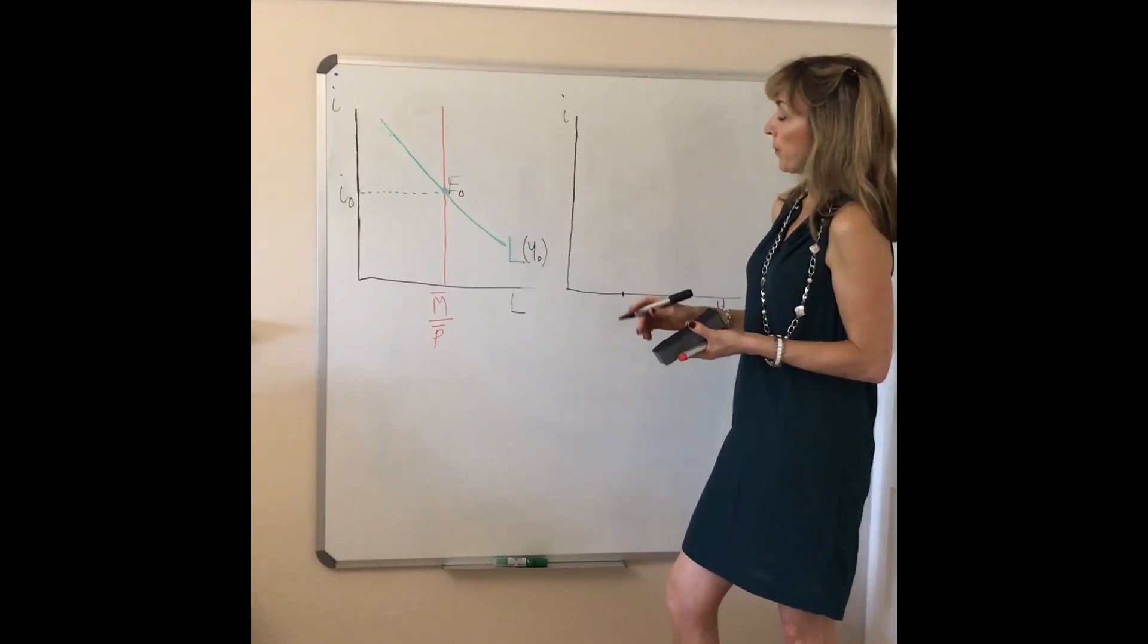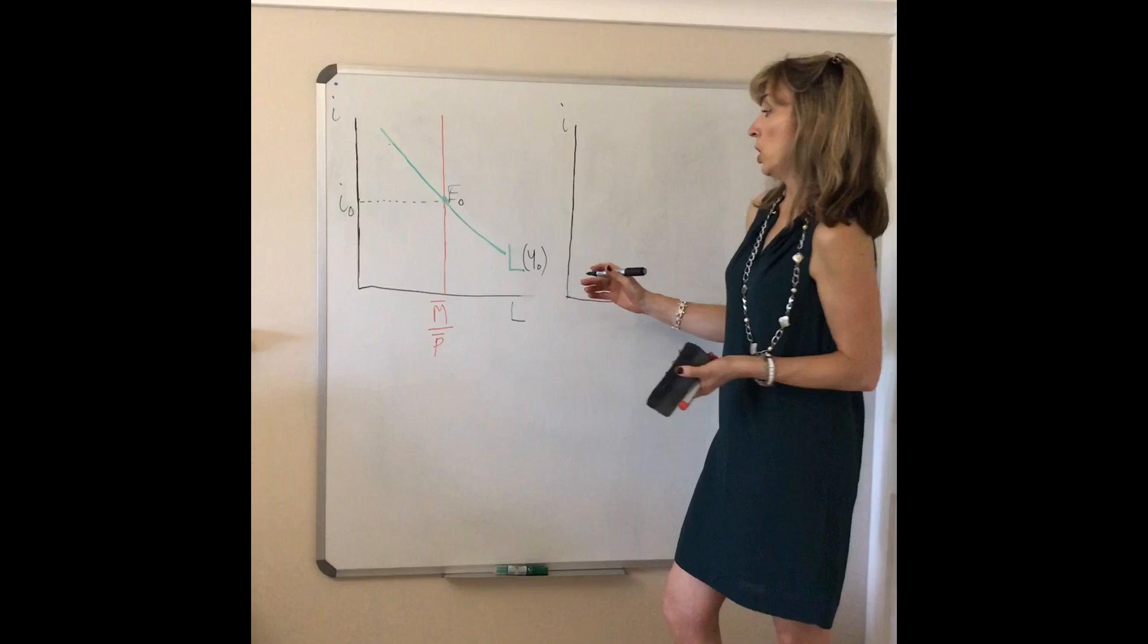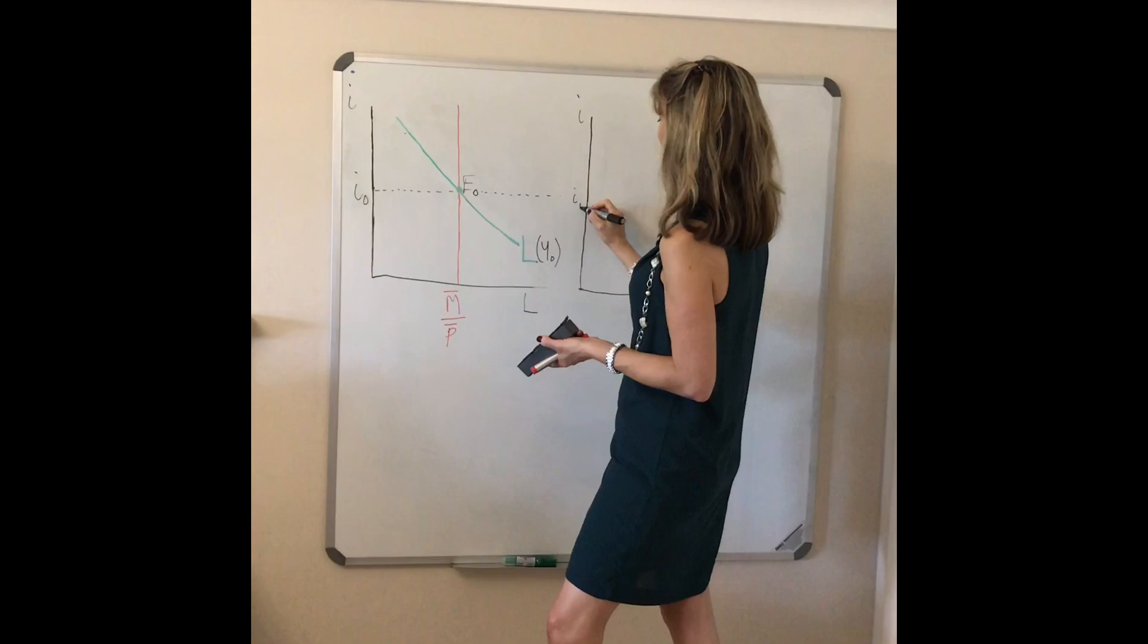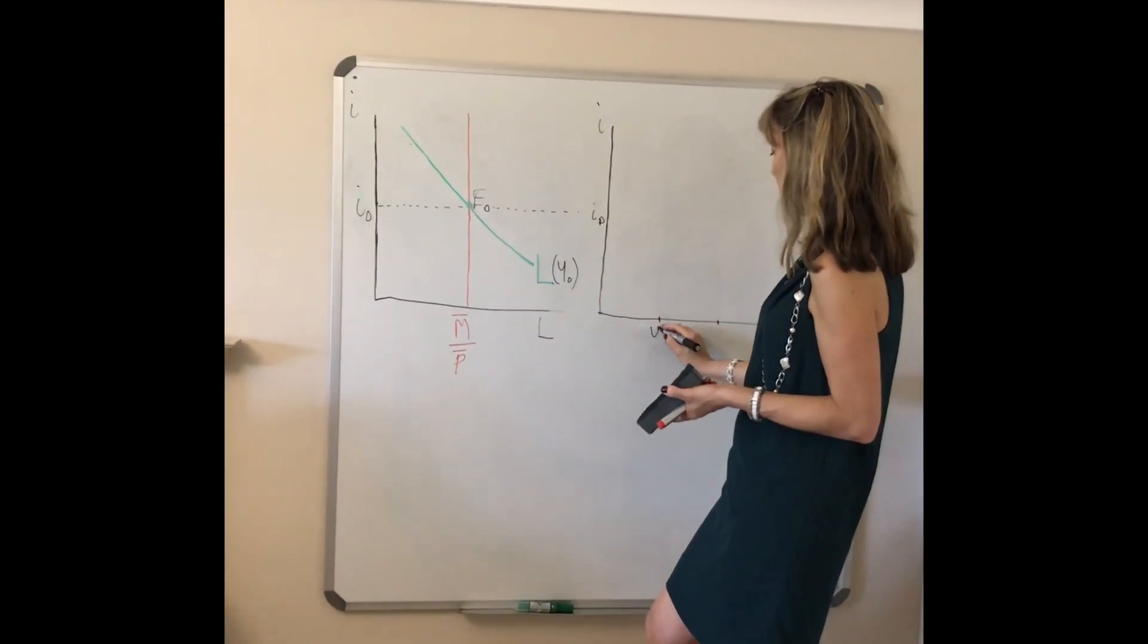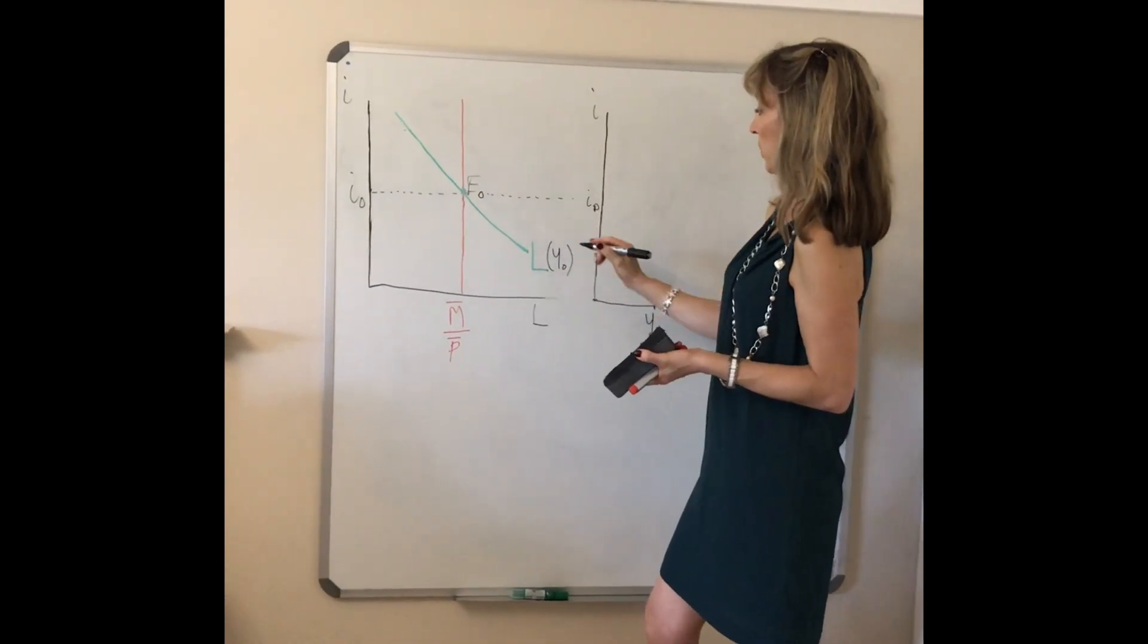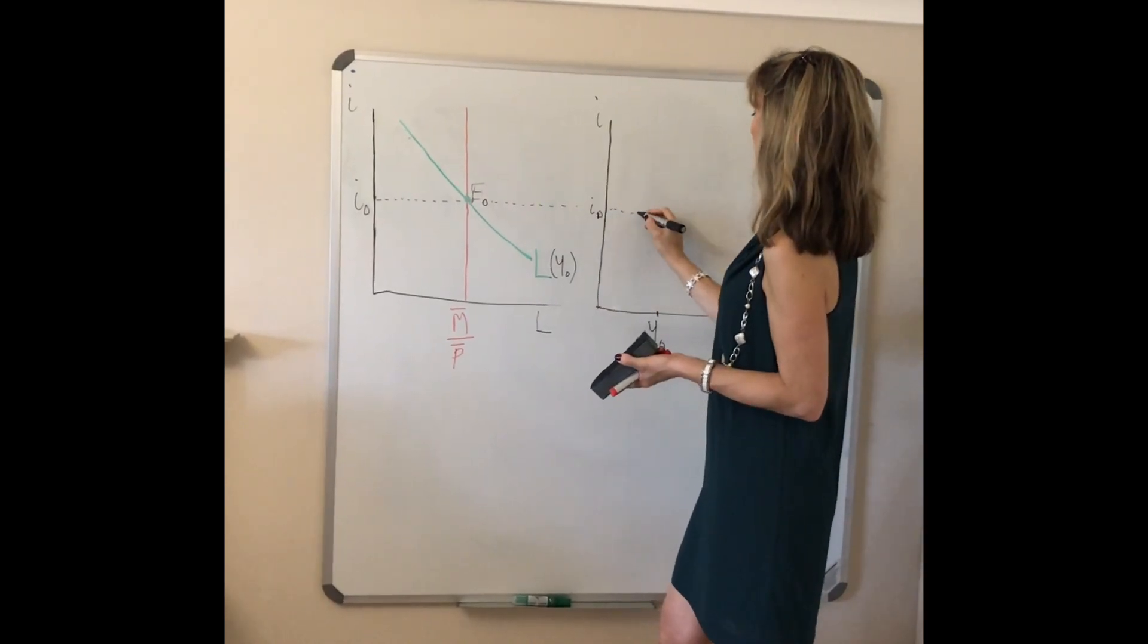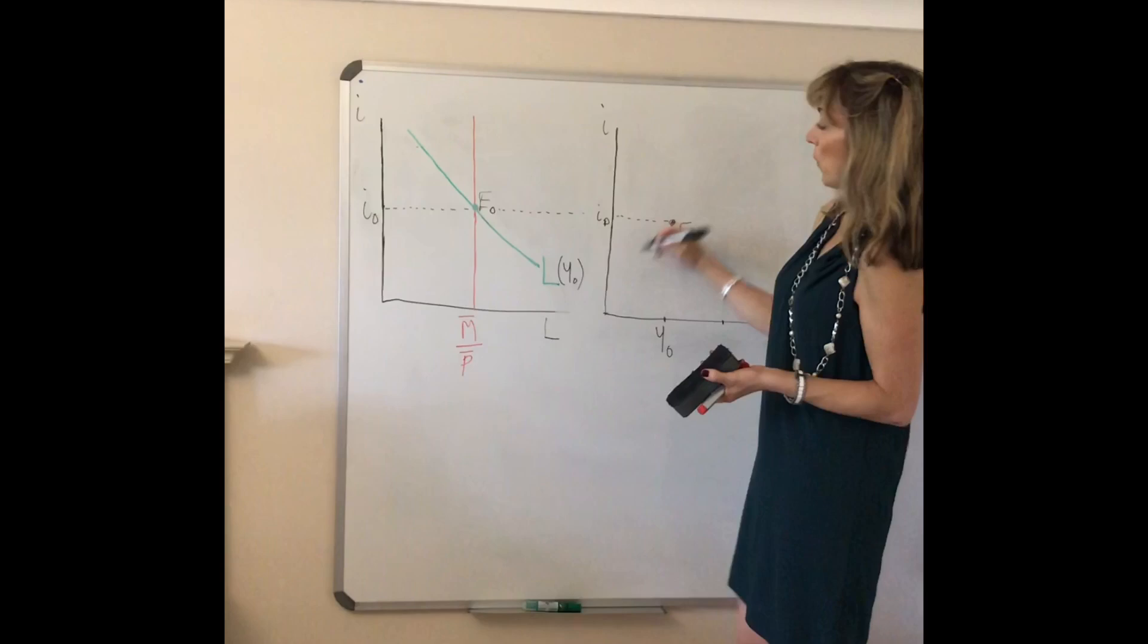We found this first point. We found that at interest rate I0 we start off with income being Y0. So at an income level fixed along your money demand curve, at an income level of Y0, the interest rate is I0, so we've got a first point E0 for our LM curve.